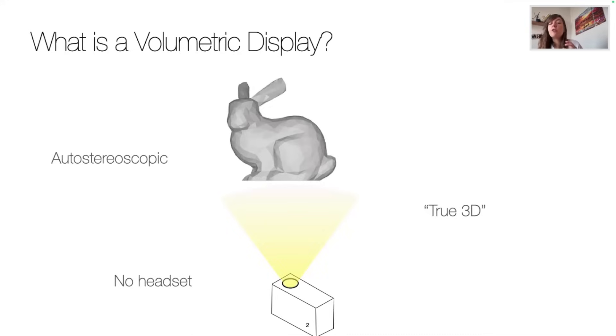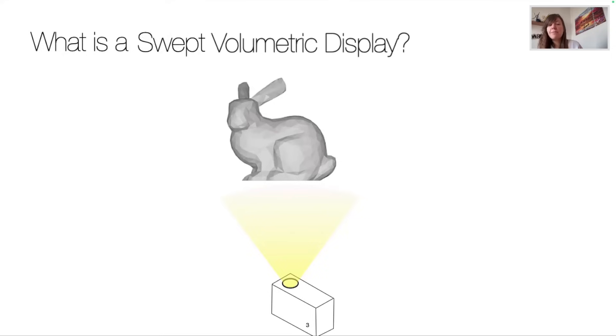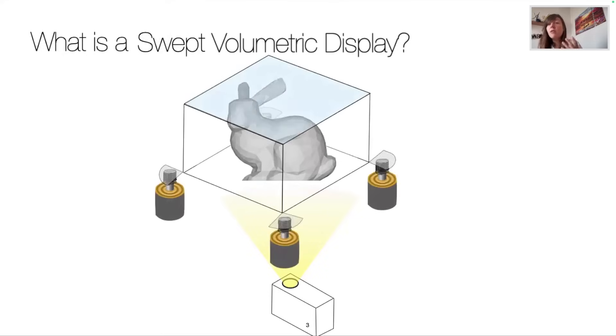But here we're going to talk about a type of volumetric displays: swept volumetric displays. They contain a physical volume in which the 3D object will be perceived, and more generally contain a diffuser on which the projection occurs, springs connected to voice coil or speakers creating an oscillation, and a projector.